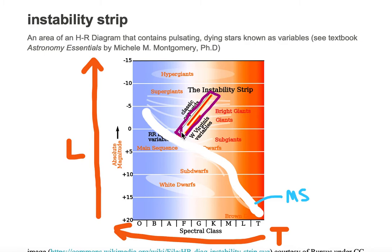Inside this purple area are objects known as variables. Typically, these are stars known as variable stars.